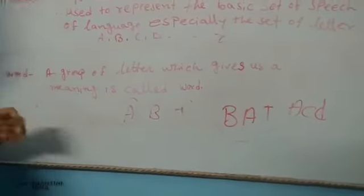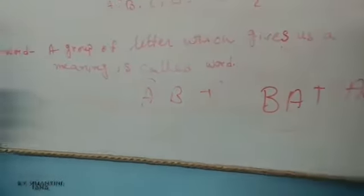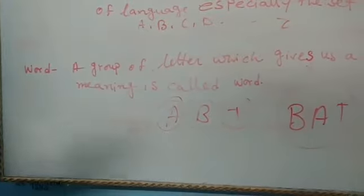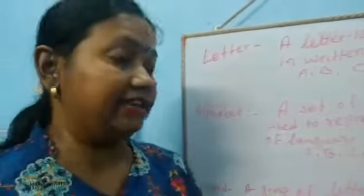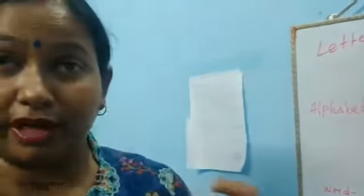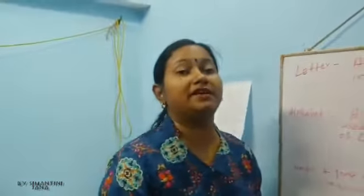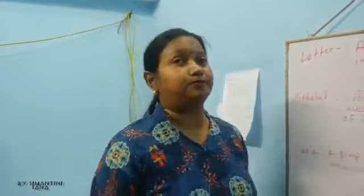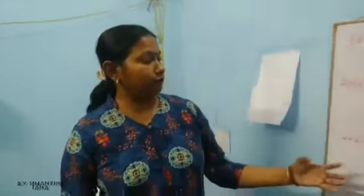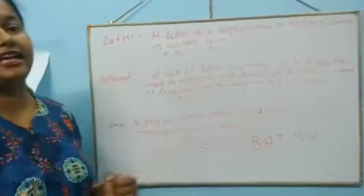So these are called words. A group of letters arranged properly, which we can pronounce correctly and which gives a meaning, is called a word. Now let's move to the next part: what is a sentence?